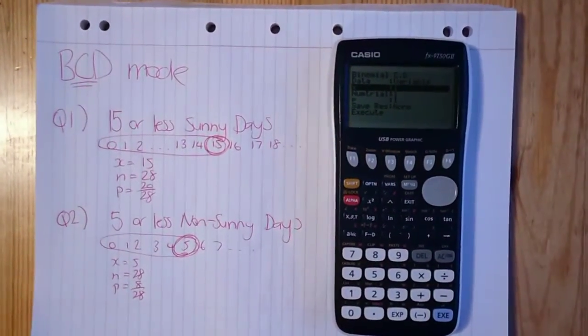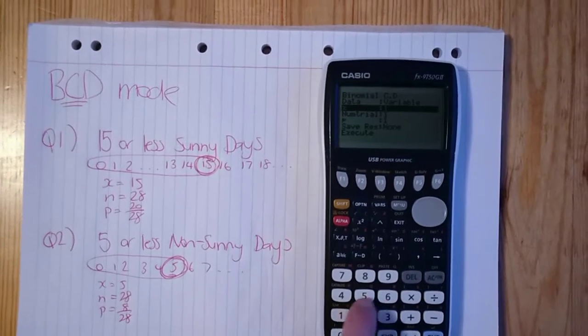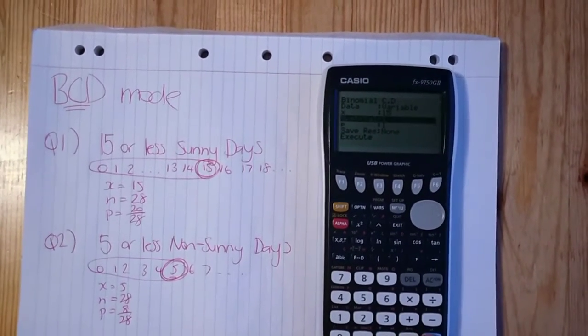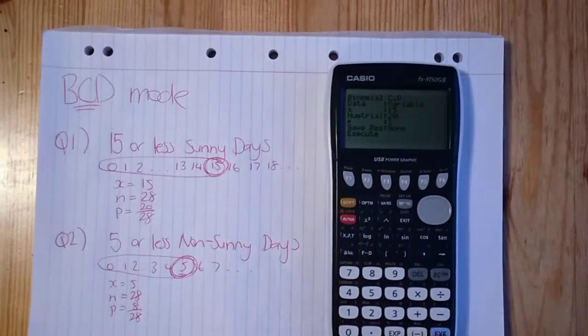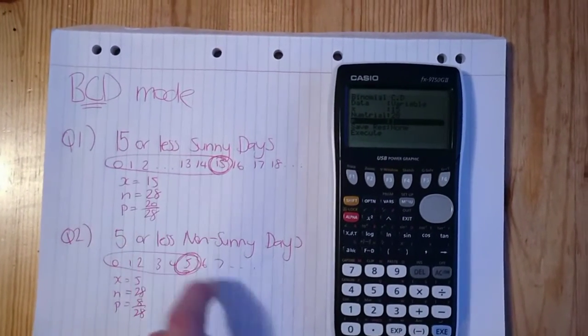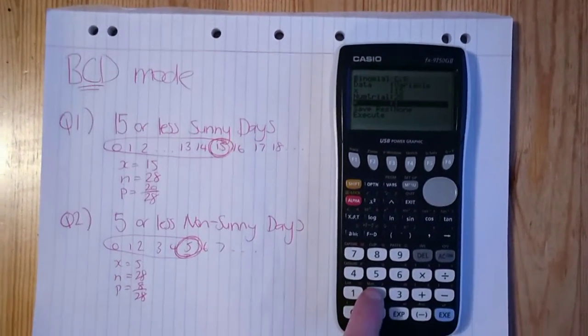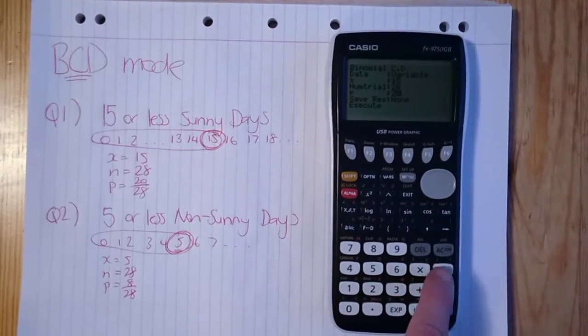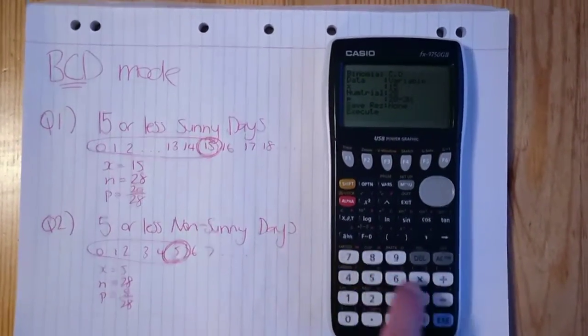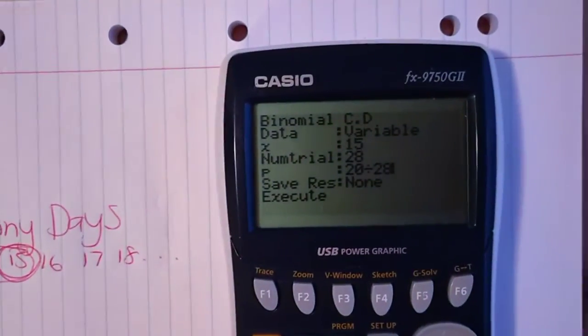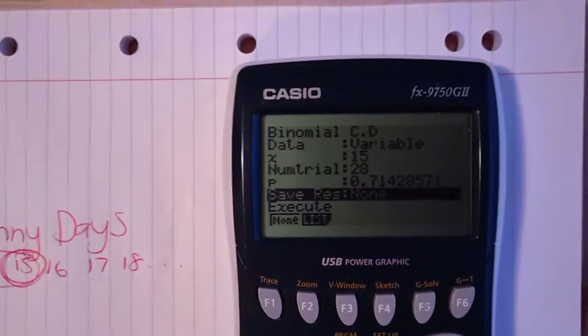So based on our calculations, x was 15, the number of trials was 28, and the probability 20 divided by 28. So we're going to go 20 divided by 28. And you'll see all of that in there. And when you push execute, it will convert it to the decimal.